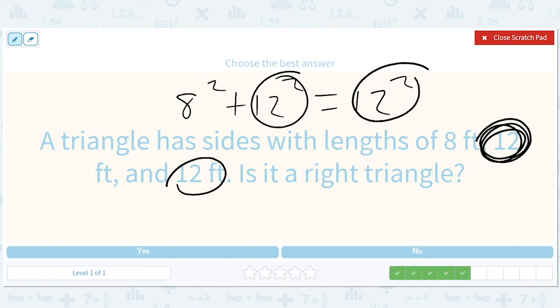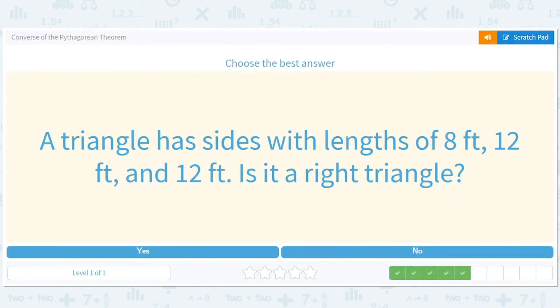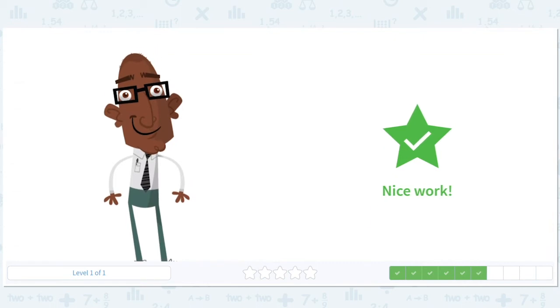If you subtract 12 squared from both sides, you'll get 8 squared equals 0, which just can't be. So no. A lot of reasons why that can't be right.